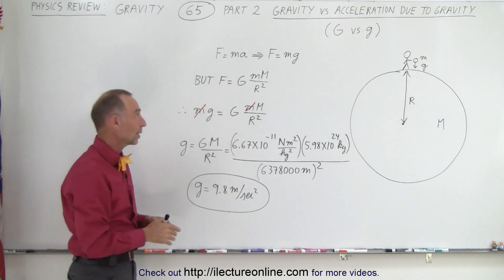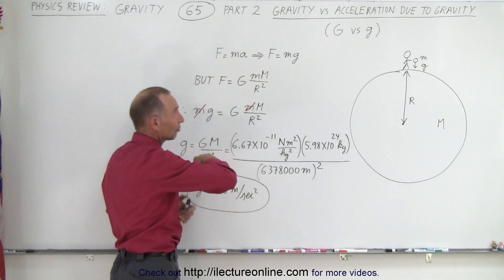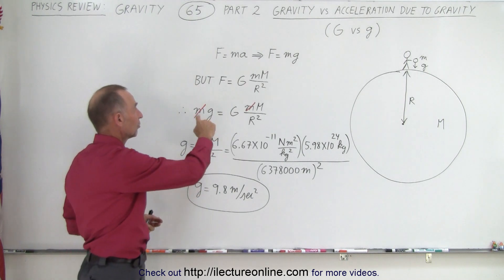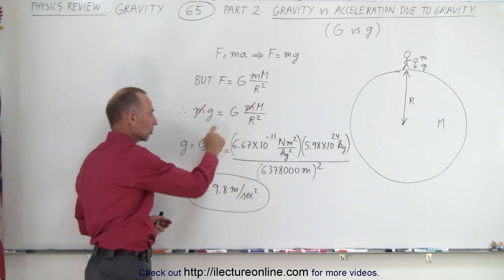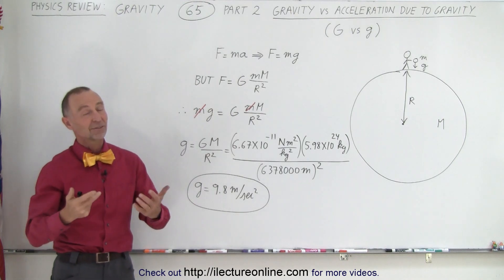That's how we can tell the difference between the force of gravity and the acceleration due to gravity. The force causes the acceleration. Big G is the universal gravitational constant, while little g is the acceleration due to gravity. And that is how it's done.